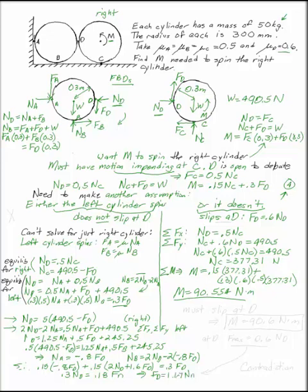The friction force being 1.67 times the normal force is impossible, since the maximum is 0.6 Nd at D. This is a contradiction. Whenever you make an assumption and reach a contradiction, that case cannot happen. So I can say with authority that the left-hand cylinder must slip at D — Case 1 is the valid one — and the moment needed to turn the right-hand cylinder is 90.6 N·m.